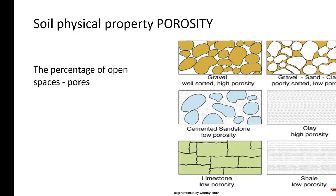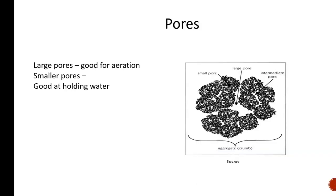Porosity — which we'll discuss in our bulk density lab — is the percentage of open spaces or pores. A lot of it has to do with surface area. Even though clay doesn't have very big pores, it's got high porosity because there's so much surface area. Gravel when well-sorted can have high porosity, but when gravel, sand, and clay are poorly sorted, it can be low porosity. Large pores are good for aeration, and smaller pores are good for holding water. This is a nice aggregate or crumb of soil — it's got small pores, large pores, and intermediate pores.